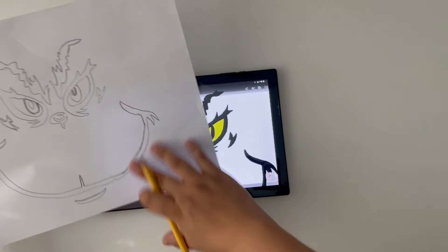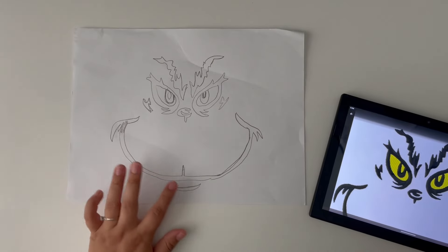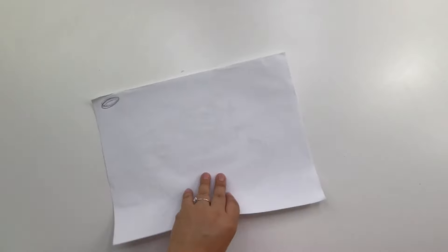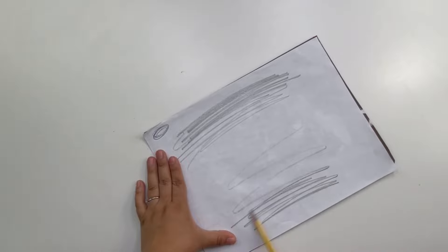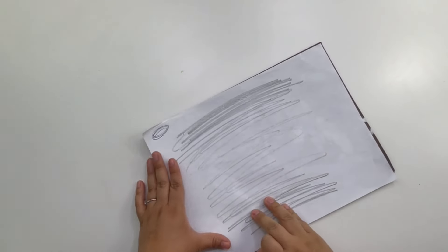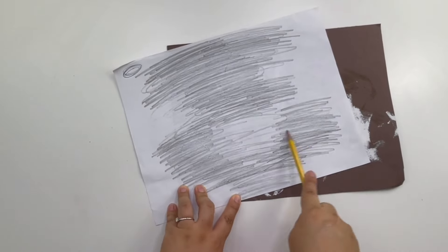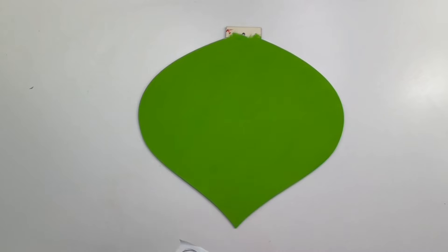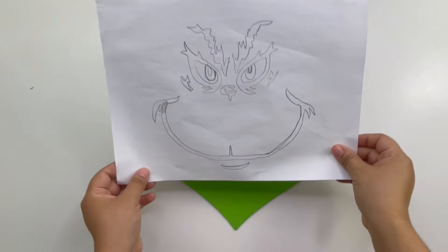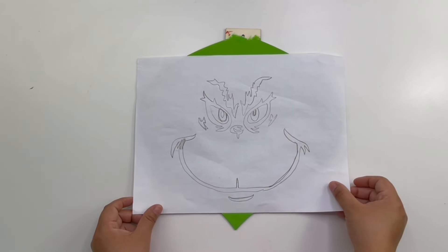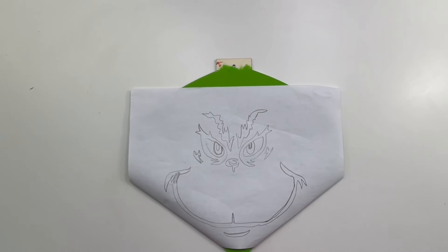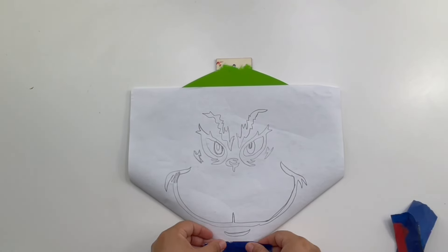As you can see the face didn't fit in this 10 inch tablet so what I did is I did the mouth first then I scrolled it down to do the eyes. So now to transfer this to my sign I am going to scribble the back with a pencil. Then I'm going to just place it on top of my sign. Now I am going to tape it down so it doesn't move then I'm going to start tracing.